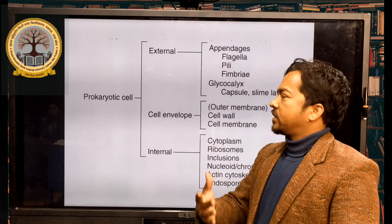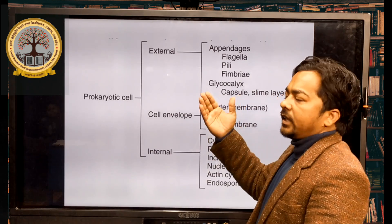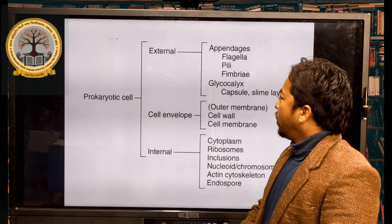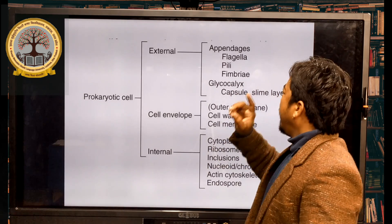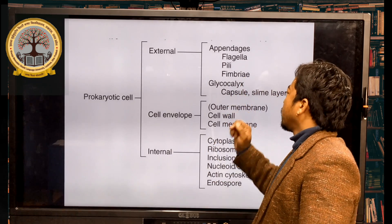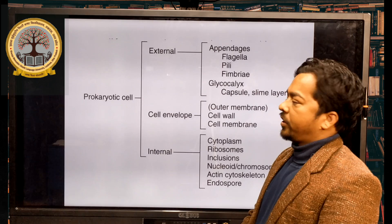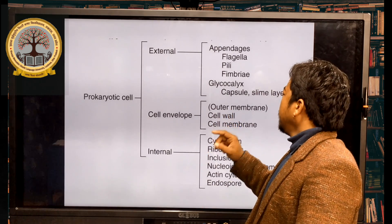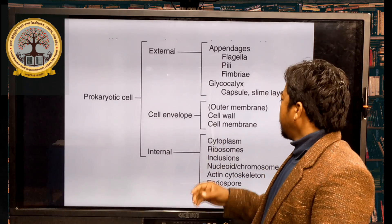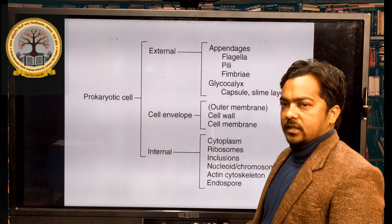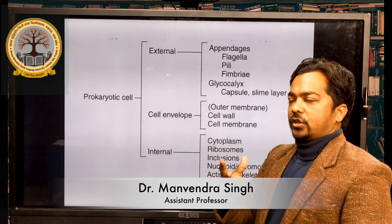When we study about prokaryotic cells, we study from outside to inside. We divide the cell into three parts: external, the cell envelope, and internal. External appendages include flagella, pili, fimbriae, glycocalyx, capsules, and slime layers. The cell envelope of prokaryotic cells consists of an outer membrane, cell wall, and cell membrane. Internal organelles include cytoplasm, ribosomes, inclusion bodies, nucleoid chromosomes, actin cytoskeleton, and endospores.